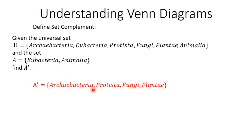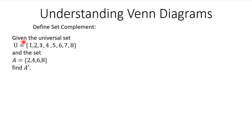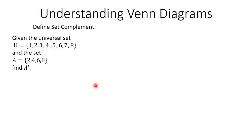One last example. Given the universal set consisting of eight numbers and set A consisting of some of those numbers, we need to find the complement of A. Everything that's not in A consists of 1, 3, 5, and 7. So we denote A's complement as equal to {1, 3, 5, 7}.